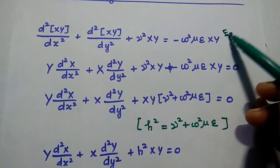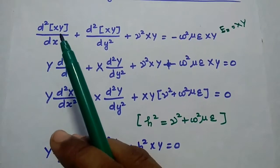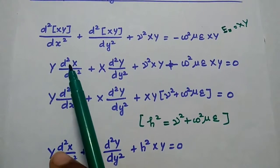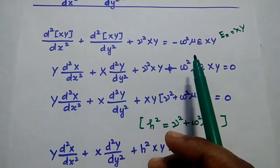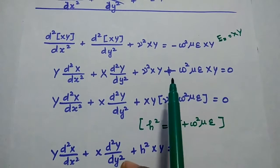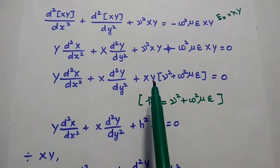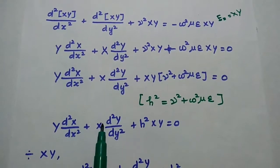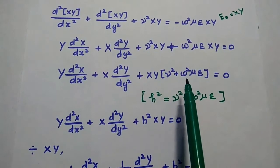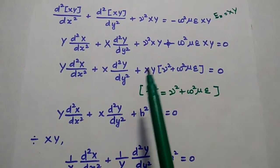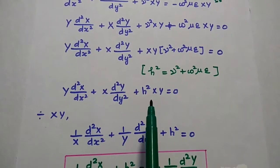All the EZ terms are replaced with X into Y. Whenever we differentiate with respect to x, Y is a constant and can be taken outside. So we get Y into d squared X by dx squared plus X into d squared Y by dy squared plus gamma squared XY. Moving the right-hand side term across gives plus omega squared mu epsilon XY is equal to 0. Taking XY as a common term: XY into (gamma squared plus omega squared mu epsilon) equals zero. Since gamma squared plus omega squared mu epsilon equals h squared, the equation becomes Y d²X/dx² + X d²Y/dy² + h² XY = 0.